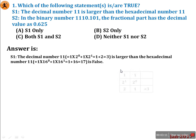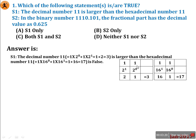S1 is false. Now the shortcut method: for binary 11, write 2^0 and 2^1 beneath the digits. 2^0 = 1, 2^1 = 2, so 2+1 = 3. For hexadecimal 11, similarly: 16^0 = 1, 16^1 = 16, so 16+1 = 17. Since 3 is not larger than 17, S1 is false.